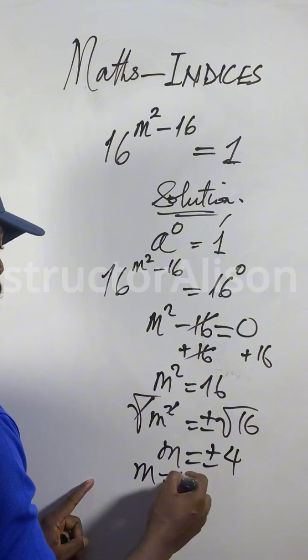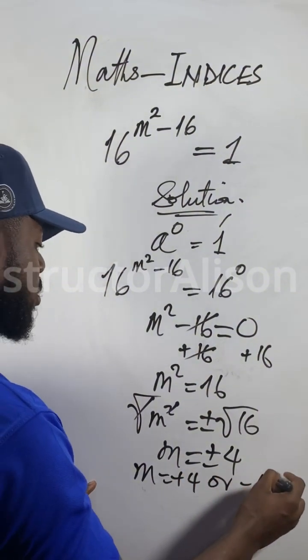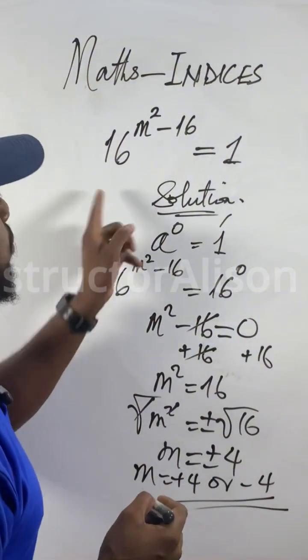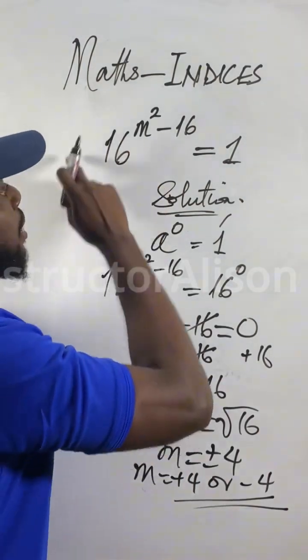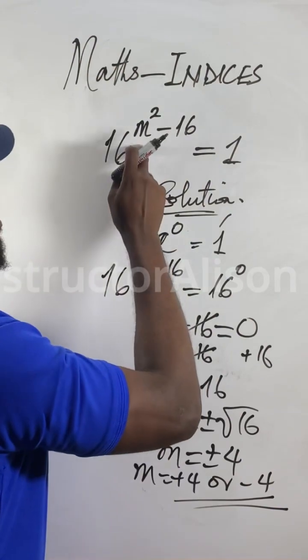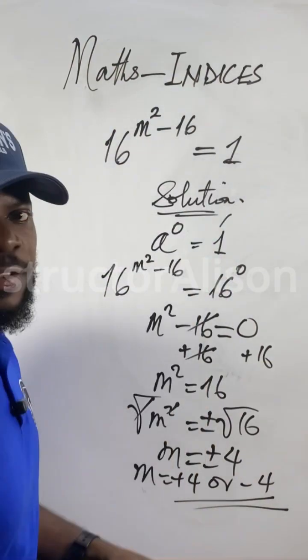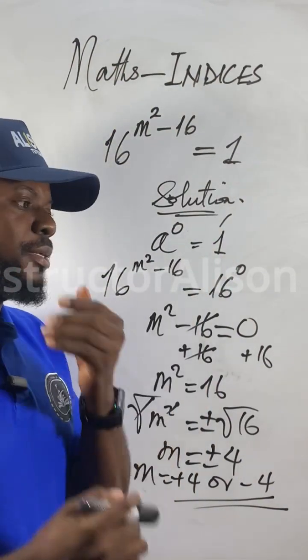So the value of m is plus 4 or minus 4. That's the solution. If you take plus 4 and put it for this m and solve everything, it will give you 1. Take minus 4, put it for this m, solve everything, it will give you 1.